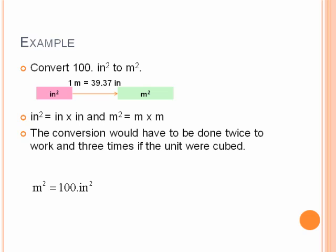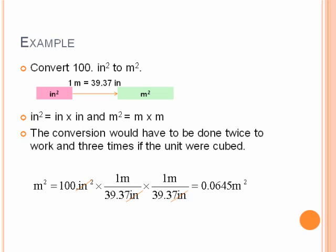So if we start with 100 inches squared, we then would use our 39.37 inches on the bottom, 1 meter on the top. Notice one of the inches cancels, but not both. So I would need to do that conversion again, or square the total conversion factor. This way you can see both of the inches cancel, and you see on the top meters times meters, which would yield meters squared. So we have the correct units. Run that through your calculator, and you will get 0.0645 meters squared.